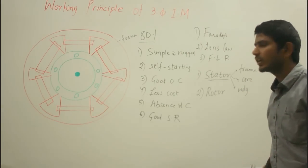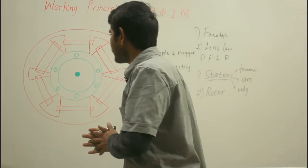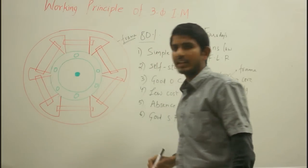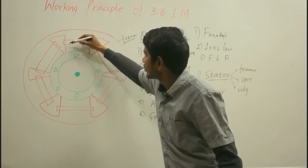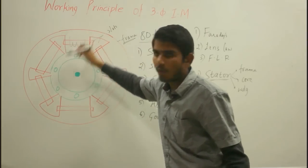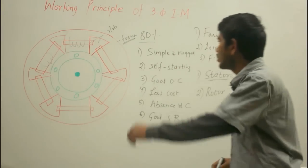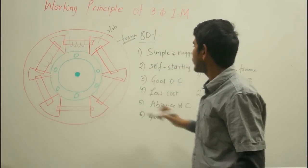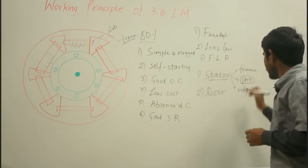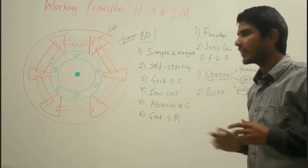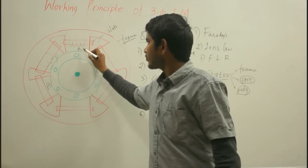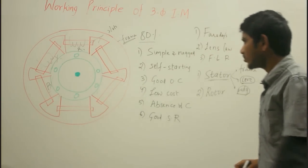The stator core carries alternating flux. Inside the periphery of the stator frame there are slots where the three-phase windings are wound. The stator winding carries three-phase windings R, Y, and B. These three-phase windings can be either delta or star connected.